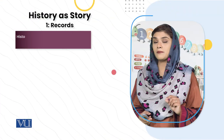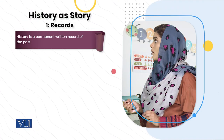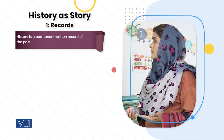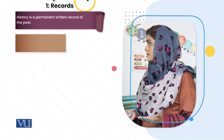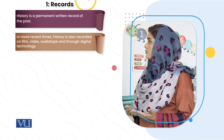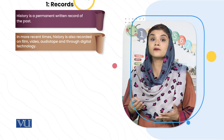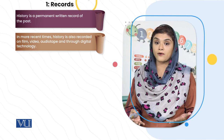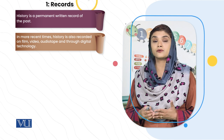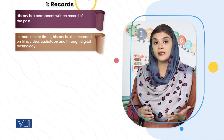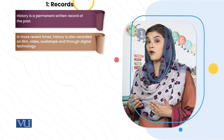The first important source of the past: history is the permanent written record of the past. In most recent times, history is not only a written record — it is in photographs, in digital form, and there are videos and audios as well.